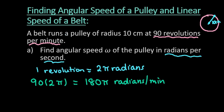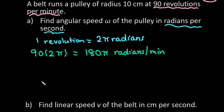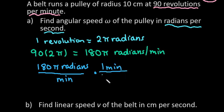Okay, so now we just have to do a simple conversion. So since we have 180π radians per one minute, what we want to do is we want to get rid of our minutes, and we know that there are 60 seconds in one minute.